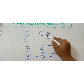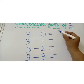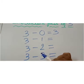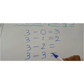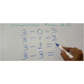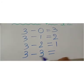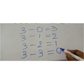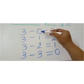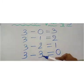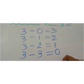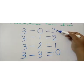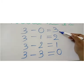3 minus 0 is equal to 3. 3 minus 1 is equal to 2. 3 minus 2 is equal to 1. 3 minus 3 is equal to 0. You can see here: 0 to 3 — the numbers go in order after. And here you can see 3 to 0 — the before number.